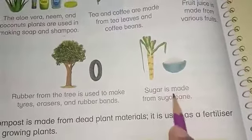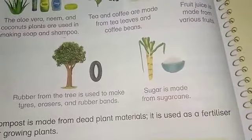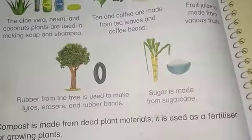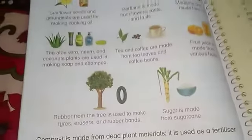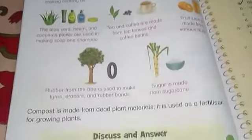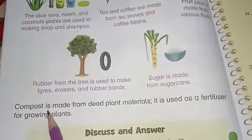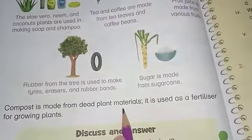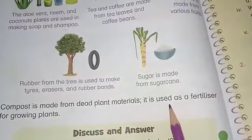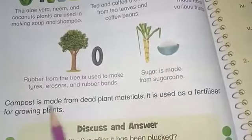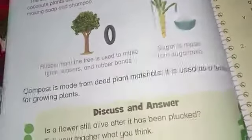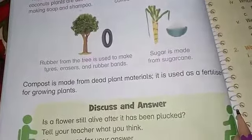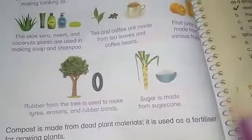Sugar is made from sugarcane — چینی جو ہے وہ ہم sugarcane سے بناتے ہیں، یعنی گنے سے بناتے ہیں۔ Compost is made from dead plant material — اب جب compost جو ہے وہ dead plant material سے بنتا ہے۔ It is used as a fertilizer for growing plants — اور یہ پودوں کو اگانے کے لیے fertilize کیا جاتا ہے۔